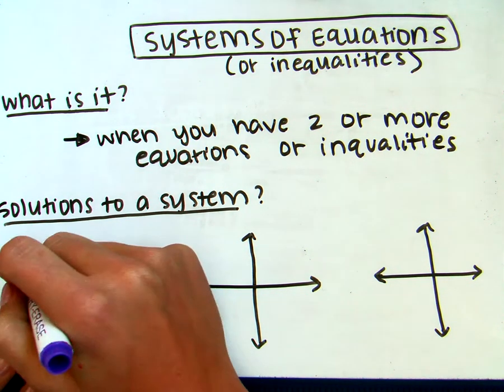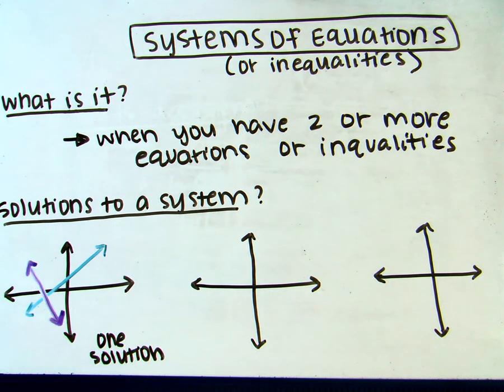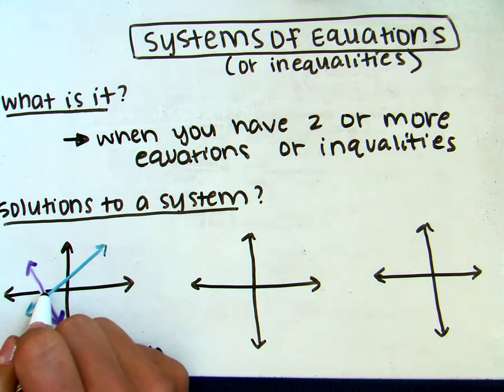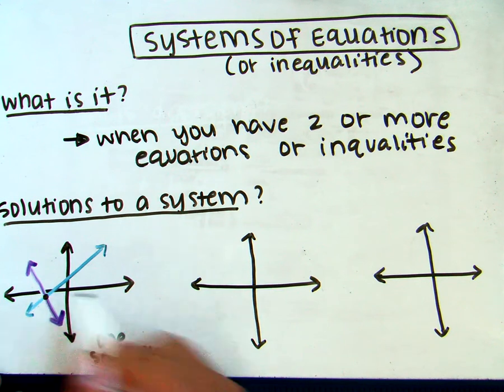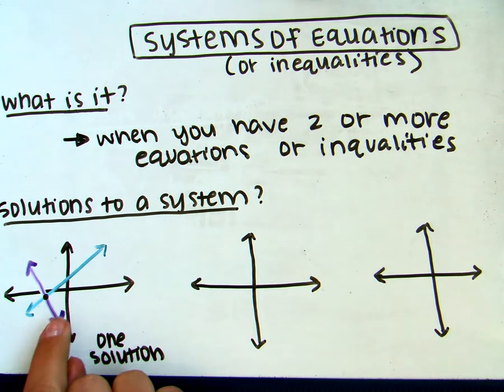it anywhere. That intersection point would be the one solution. It's wherever they are equal. In this case, if you have two graphs that cross, then they have one solution.